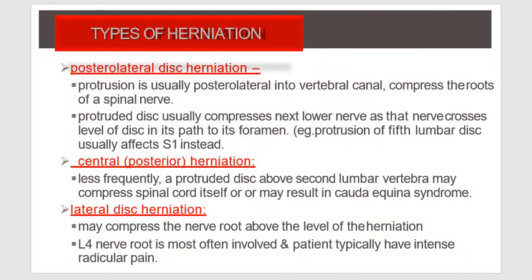Types of herniation: first is posterolateral disc herniation, where the protrusion occurs posterolaterally into the vertebral canal, compressing the roots of a spinal nerve. A protruded disc usually compresses the next lower nerve root that crosses the level of the disc in its path to its foramen. For example, protrusion of the fifth lumbar disc usually affects the S1 nerve root.